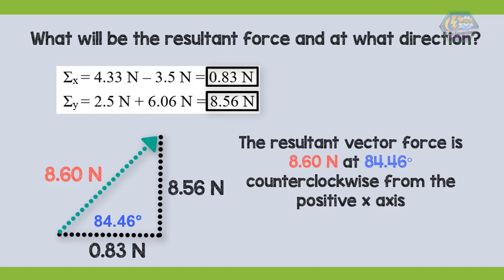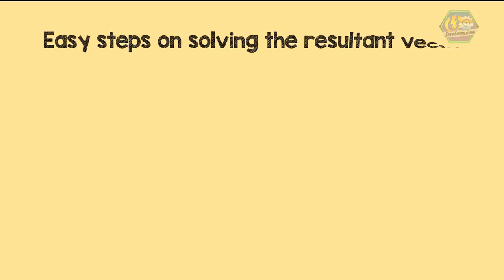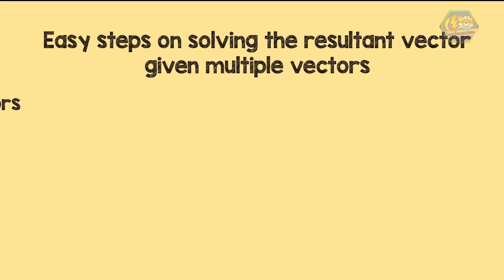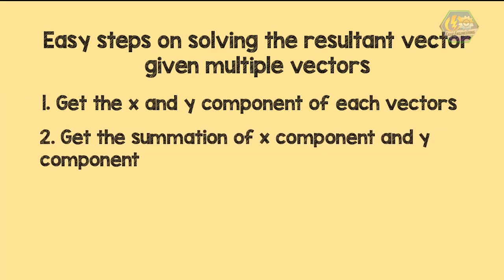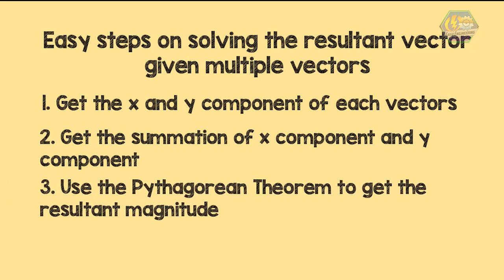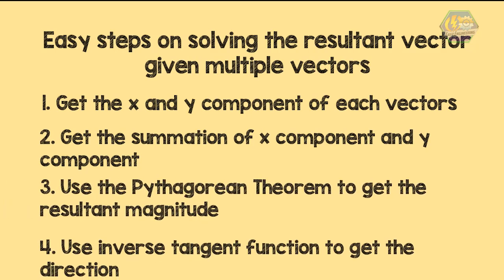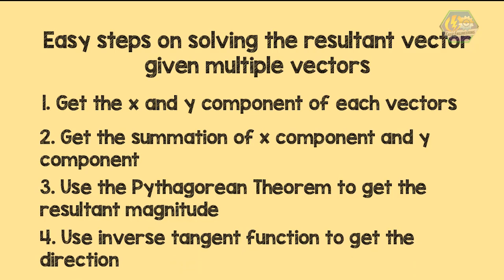Before we end, here are the steps for solving the resultant vector given multiple vectors: 1) Get the X and Y component of each vector. 2) Get the summation of X components and Y components. 3) Use the Pythagorean theorem to get the resultant magnitude. 4) Use the inverse tangent function to get the direction. I hope you learned something today. Once again, this is Easy Engineering.